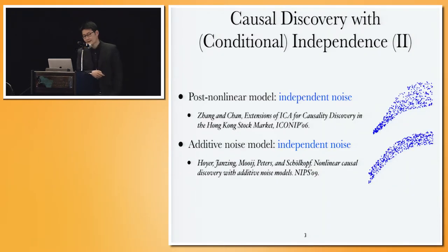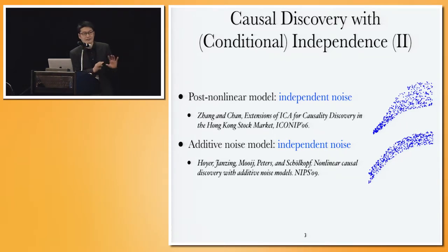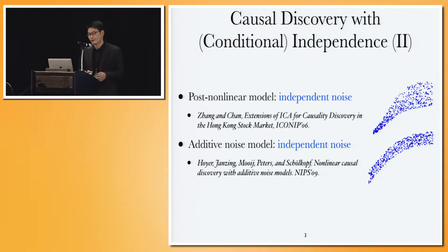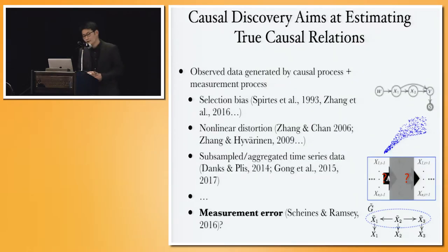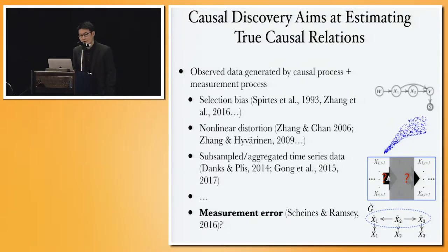In the last 10 years, non-linear models were also proposed to solve the problem. Even with very complicated non-linear models, you can still recover the underlying true causal structure from data. Now, for successful causal discovery, we have to deal with not only the causal process, but also the measurement process or the sampling process. By causal discovery, we want to estimate the underlying true causal structure and causal model from data.